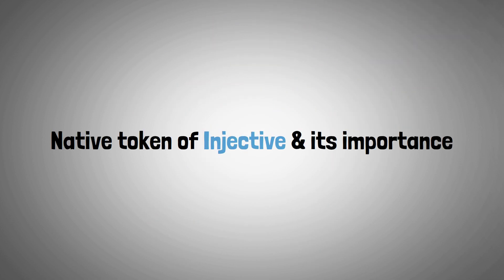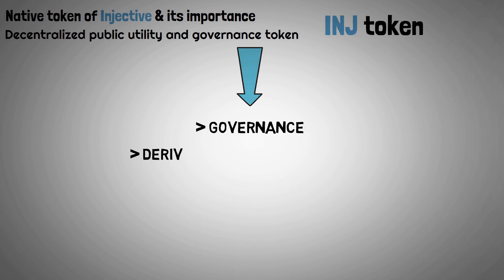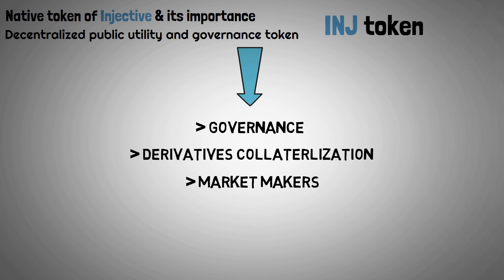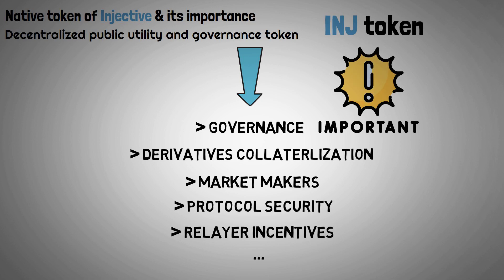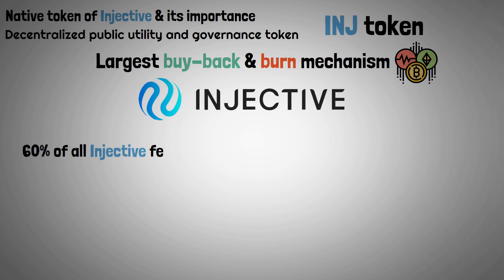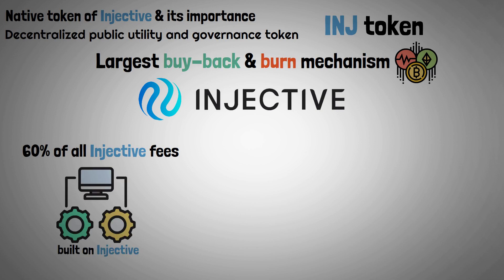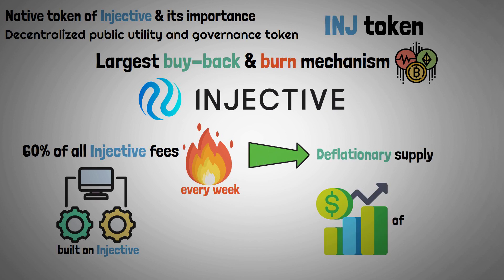The native token of Injective is the INJ token, which serves as the decentralized public utility and governance token. It is significant because it affects governance, derivatives collateralization, market makers, protocol security, relayer incentives, and other things. Additionally, the largest buy-back and burn mechanism in the cryptocurrency exchange market is used by Injective — 60% of all Injective fees, including those from all exchange decentralized applications built on Injective, are burned every week. The result is a general deflationary supply that gradually increases the scarcity of the INJ token.